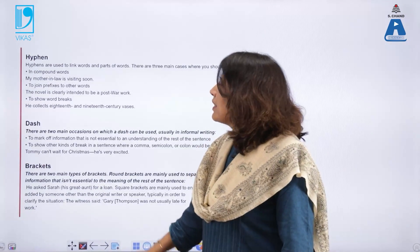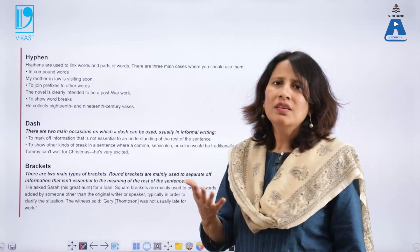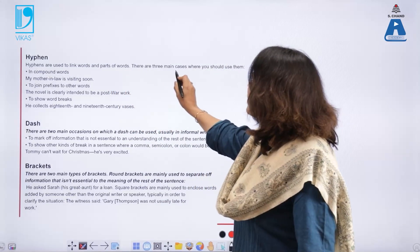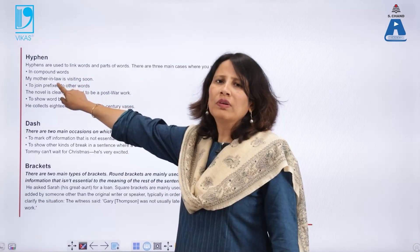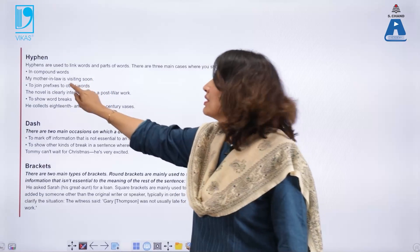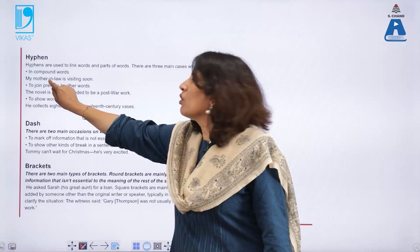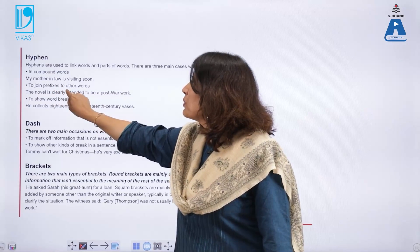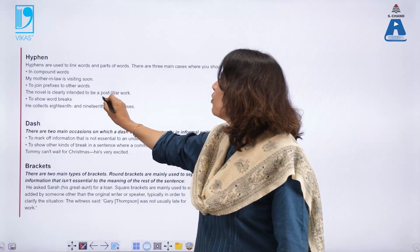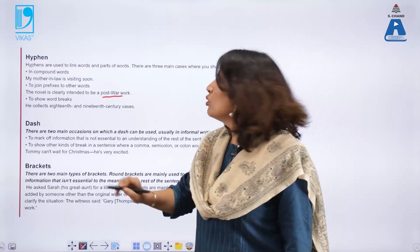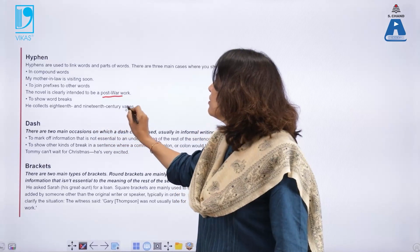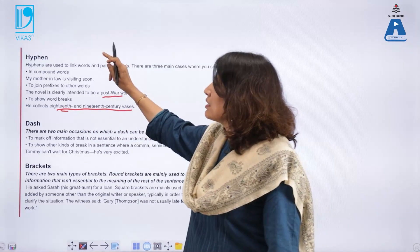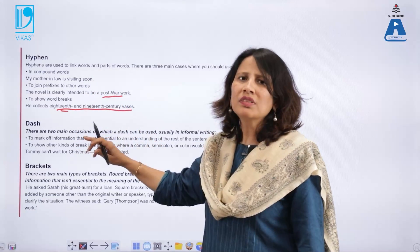The hyphen is the most misused punctuation mark. It is used to link words and parts of words in three main cases: in compound words — for example, 'my mother-in-law is visiting soon'; to join prefixes to other words — for example, 'the novel is clearly intended to be a post-war work'; and to show word breaks — for example, 'he collects 18th and 19th century vases.'